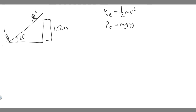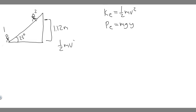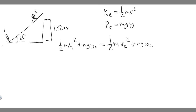We take the kinetic energy at point 1 plus the potential energy at point 1 and set it equal to the kinetic energy plus potential energy at point 2. So: ½mv₁² + mgy₁ = ½mv₂² + mgy₂. We need to find v1, y1, v2, and y2.